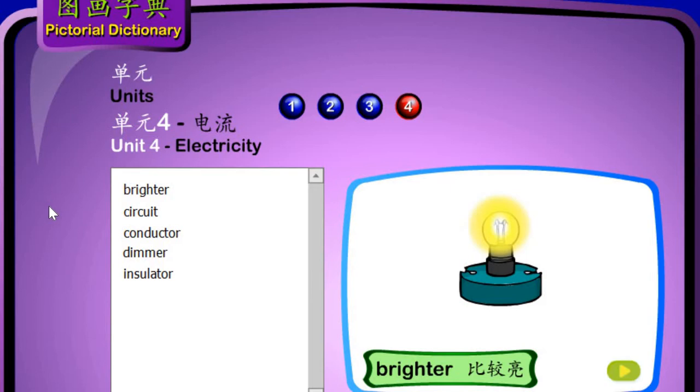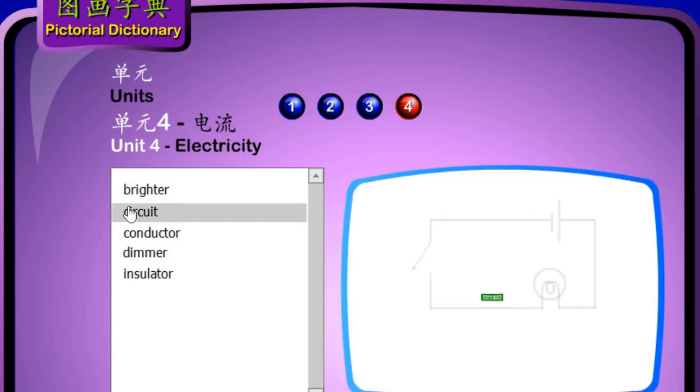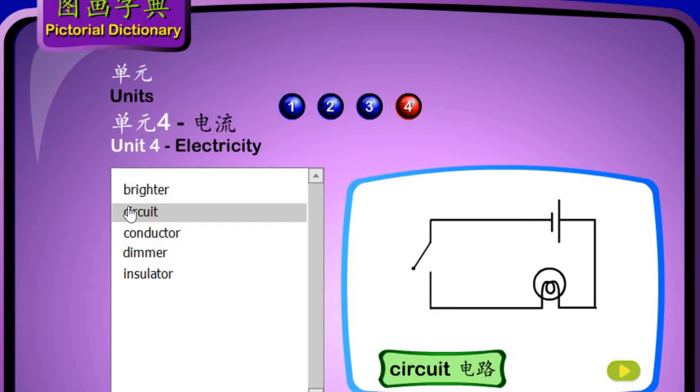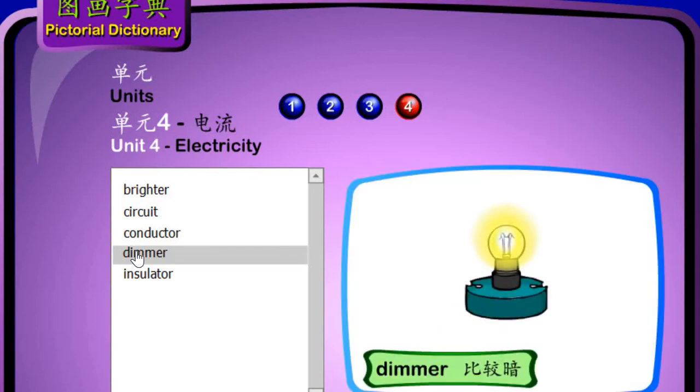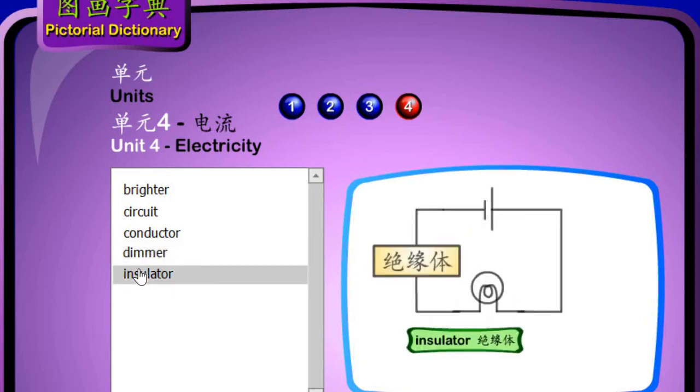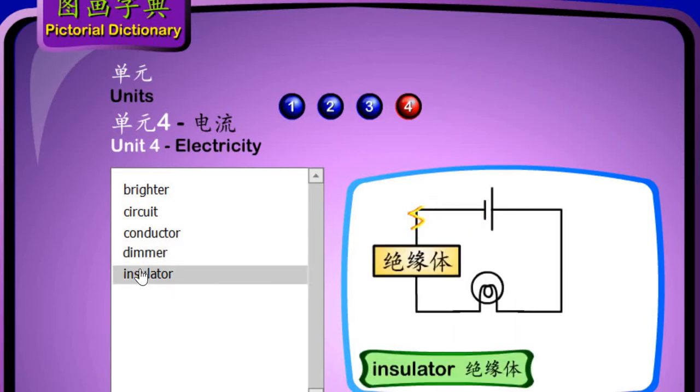Brighter. Circuit. Conductor. Dimmer. Insulator.